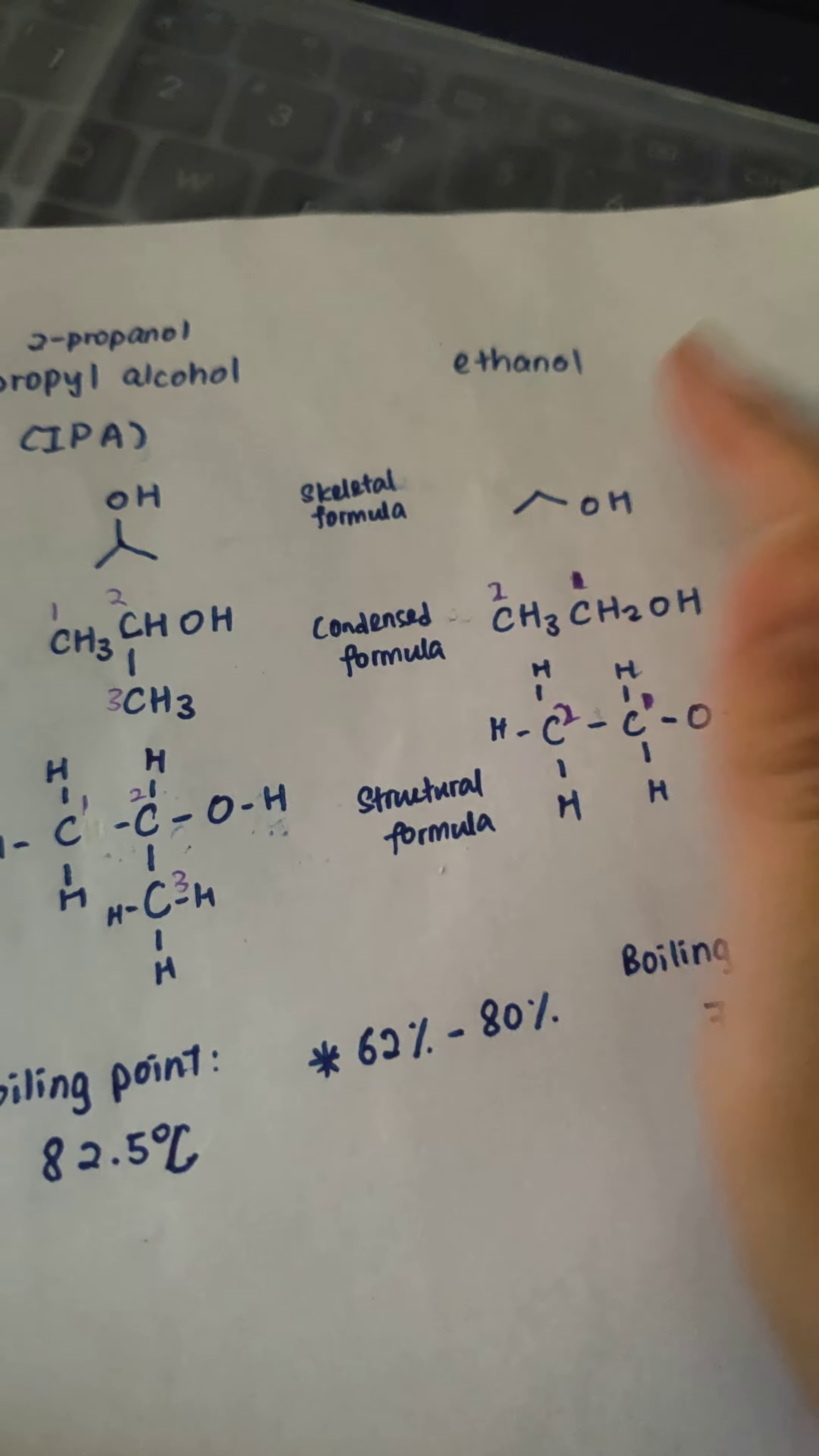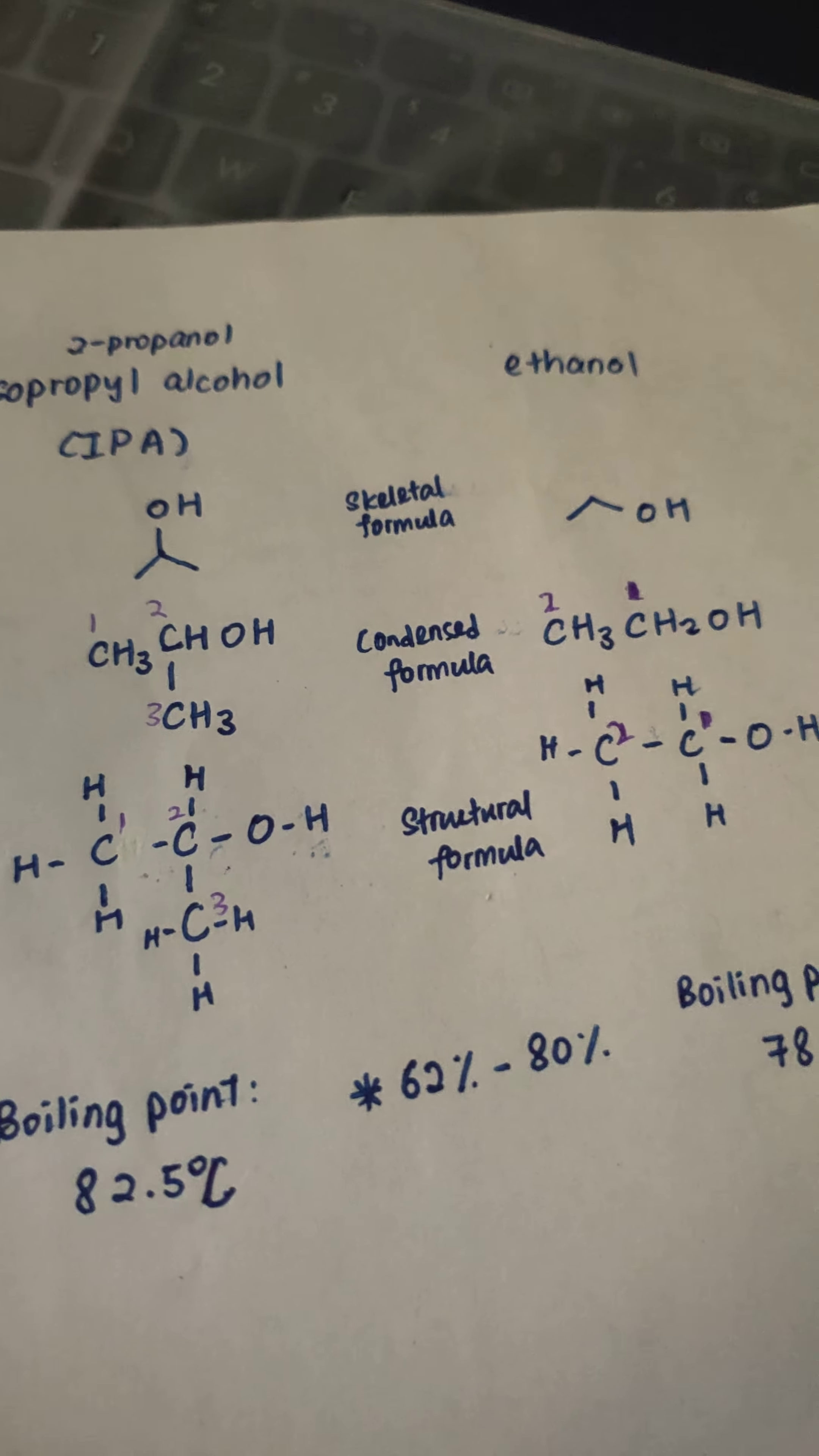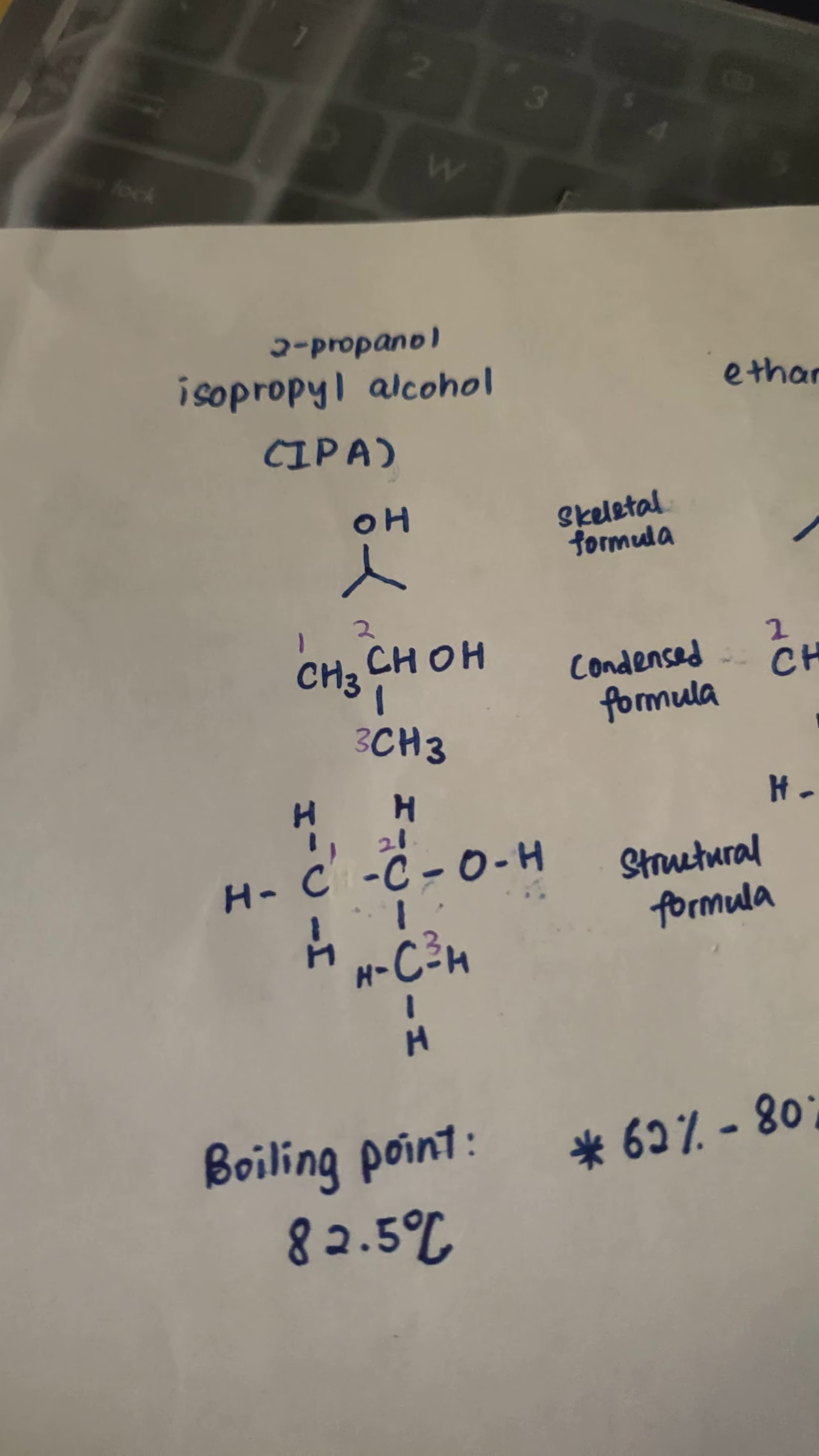This one, ethanol, will evaporate off faster and leave the surface drier faster. And IPA might take longer time for the surface to get dried.